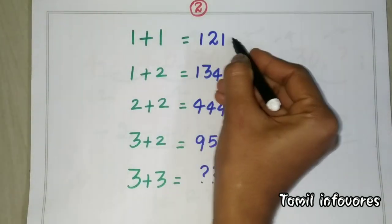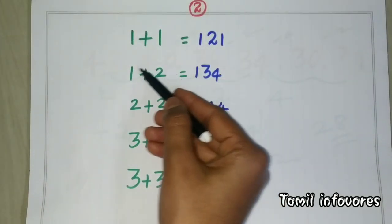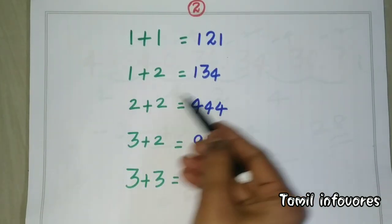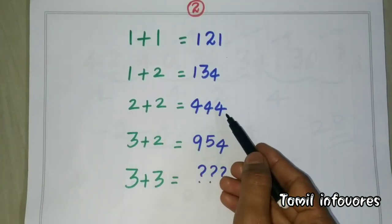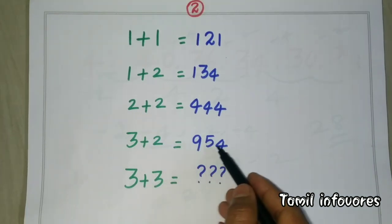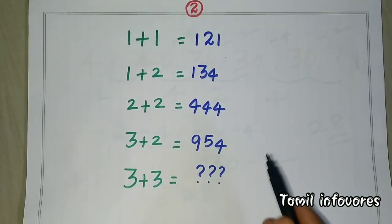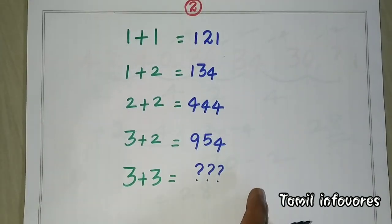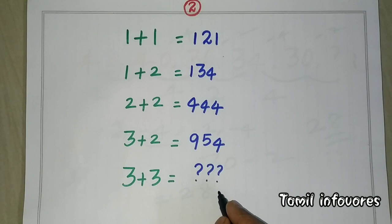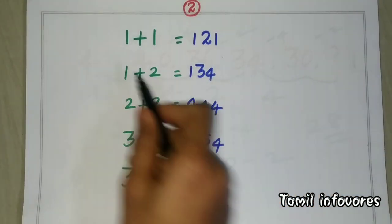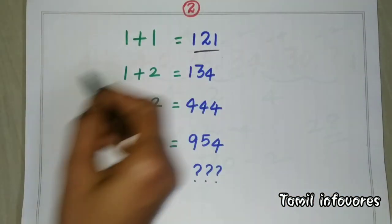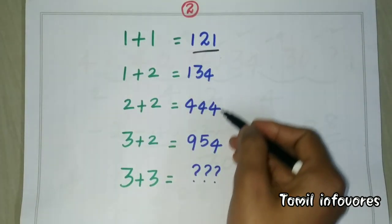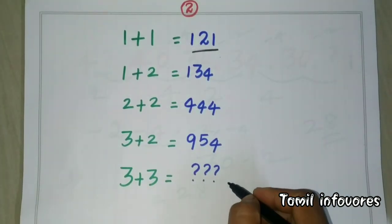Next, the second puzzle. The second result: 1 plus 1 equals 1; 1 plus 2 equals 134; 2 plus 2 equals 4; 3 plus 2 equals 954; 3 plus 3 equals a question mark. So 1 plus 1 equals 1. We return to 1 and find the first number — the next one is not equal to 1.